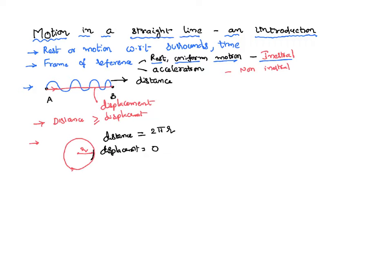Distance is treated like a scalar — there is no worry about direction. Displacement is treated like a vector, which has a specified direction and satisfies the rules of vectors. The distance travelled by a body in a specified time is called speed, defined as rate of change of distance. Whereas the displacement covered per second, or rate of change of displacement, is called velocity.